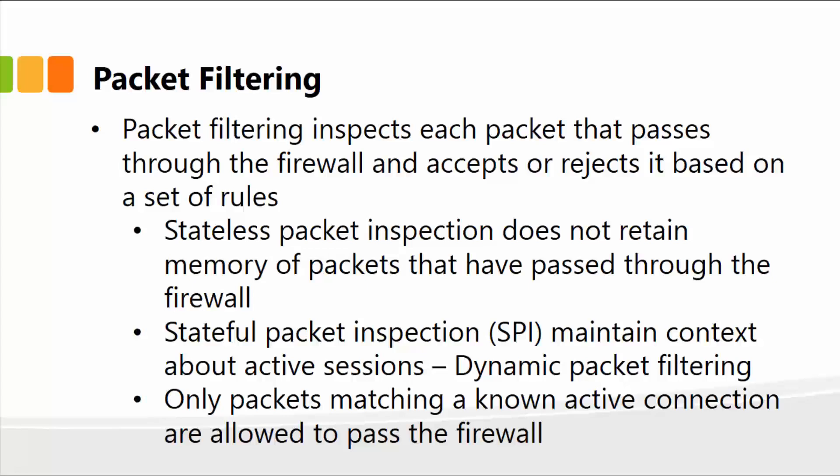Packet filtering inspects each packet that passes through the firewall and accepts or rejects it based on the set of rules you've configured. There are two types. Stateless packet inspection does not retain memory of packets that have passed through the firewall — typically TCP/IP is stateless. Stateful packet inspection, or SPI, maintains context about active connections, keeping information in its own cache or memory. Dynamic packet filtering is another name for this. Only packets that match a known active connection are allowed to pass — it's a step above stateless packet filtering.